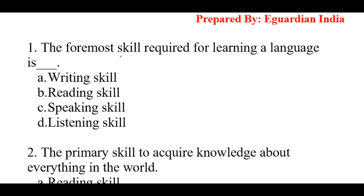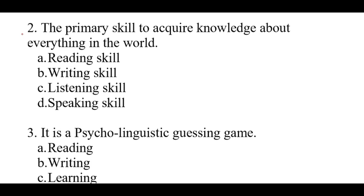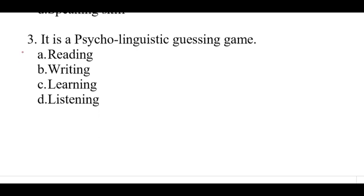Question number 1: The foremost skill required for learning a language. The right answer is option B: Reading skill. Question number 2: The primary skill to acquire knowledge about everything in the world. The right answer is option A: Reading skill. Question number 3: It is a psycholinguistic guessing game. The right answer is option A: Reading.